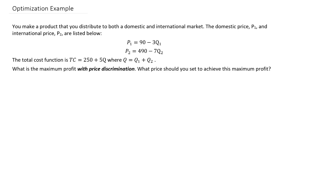Here we have an example where we're going to try to optimize profit with a bit of a twist. We're going to have two different markets — a domestic and an international market — with different pricing schemes for each, based on different quantities, different demands, and different pricing.